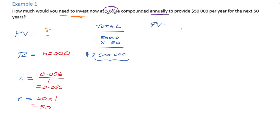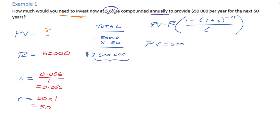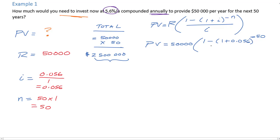We're going to use the present value formula because we want to know how much we've got to put in right now. The formula is: PV = R times [1 minus (1 plus i) to the power of negative N], divided by i. I always forget that negative — hopefully you don't. When punching this in the calculator, start with 1 plus 0.056, then raise it to the power of negative 50, then calculate 1 minus that number, divide by the interest rate, and multiply by 50,000. It's a lot of calculator work.